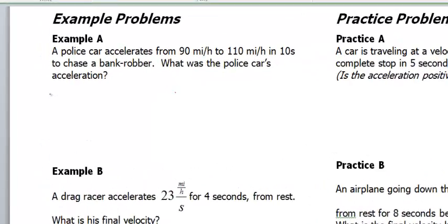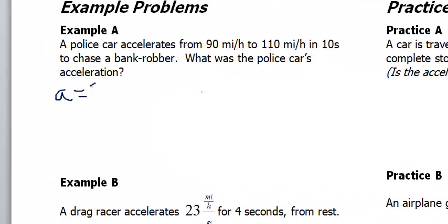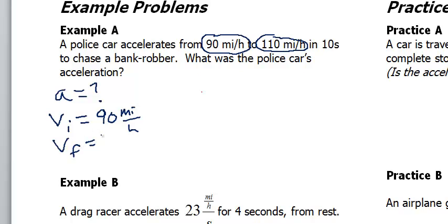Alright, so we can see here that the police car's acceleration is our unknown variable. And I see this information, from 90 miles per hour. That means he was starting with an initial speed of 90 miles per hour. And the police car went to a final speed of 110 miles per hour. And the time it took for that change to occur was 10 seconds.